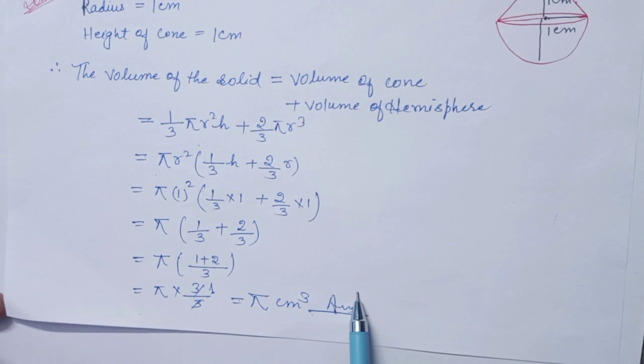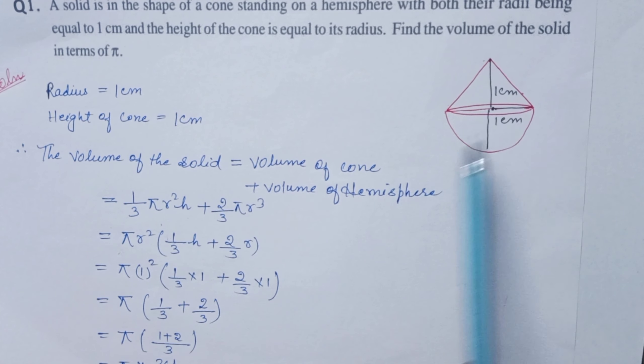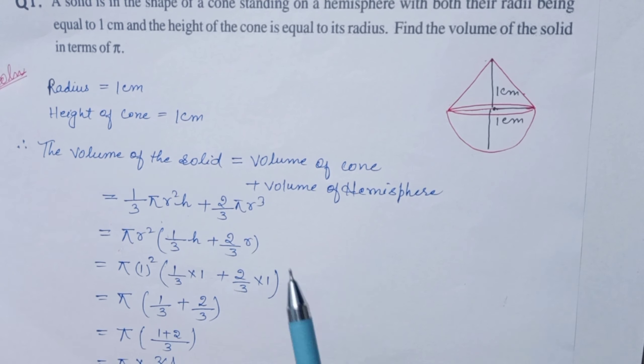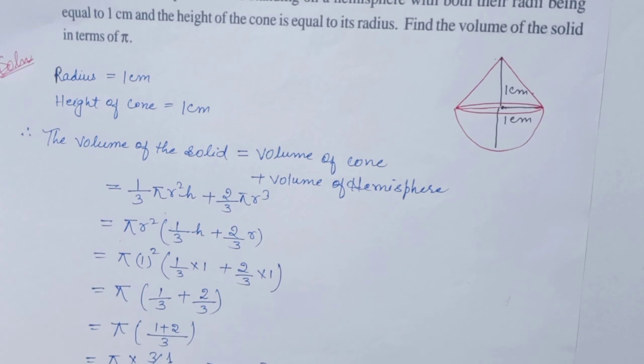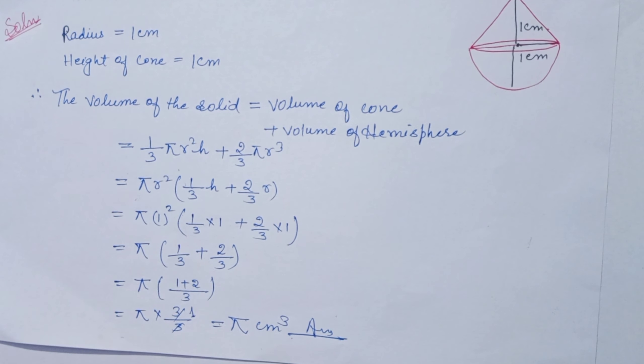This is the volume of the required solid. Simply the cone volume plus the hemisphere volume. I hope you will be able to understand this very well. Practice with the next question.